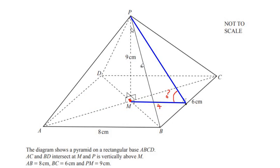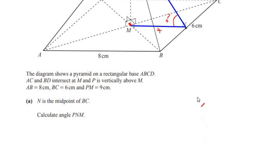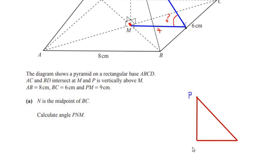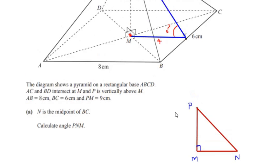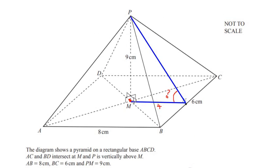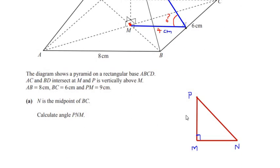We can clearly see that PMN is forming a right angle triangle. So let me draw it: triangle PMN, where P is at the top, M is the right angle vertex, and N is at the base — 90 degrees at M. PM is given as 9 centimeters and MN we got as 4 centimeters.